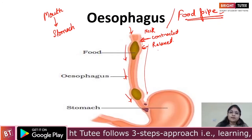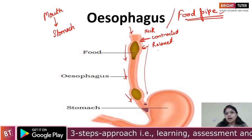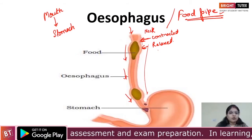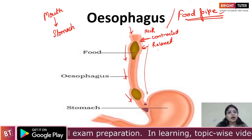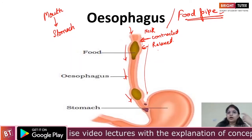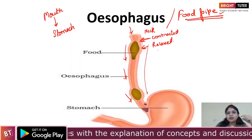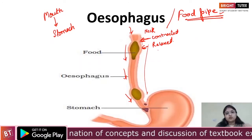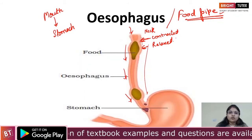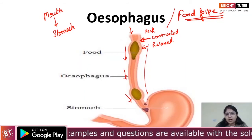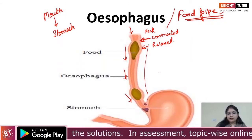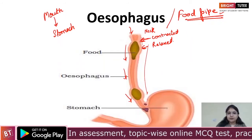This kind of movement is seen throughout the alimentary canal, which allows the movement of food from one part of the alimentary canal to the other. Once we have swallowed the food from the buccal cavity, it moves from the esophagus to the stomach with the help of this movement, which occurs throughout the alimentary canal. This is a very important movement which happens in the esophagus.